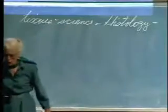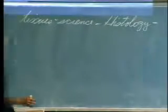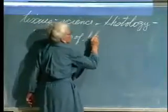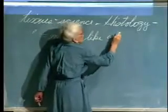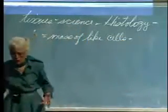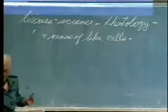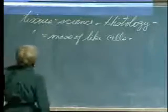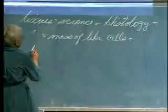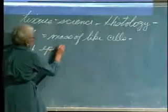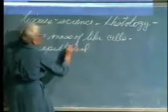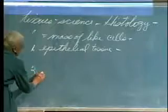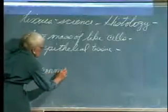So what's a tissue? It's a mass of like cells - a tissue equals a mass of like cells. Would you believe your bodies are made up of only four kinds of tissue? Your total body is divided into four kinds: number one, epithelial tissue; number two, connective tissue.